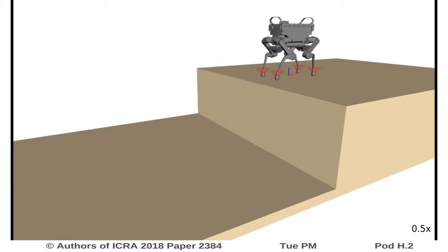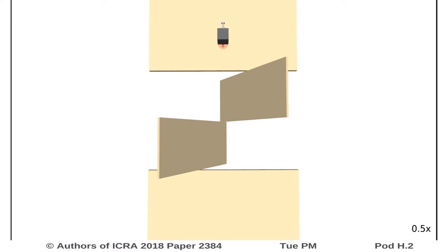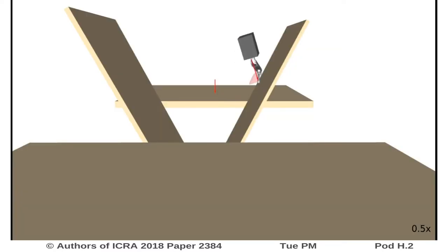Since these physical laws are modeled in the problem, the algorithm can use tilted walls to cross an otherwise untraversable gap.